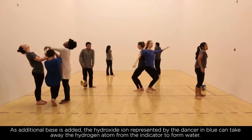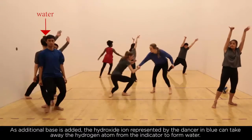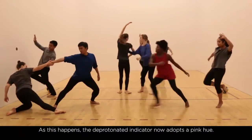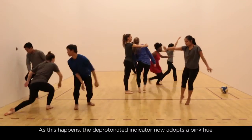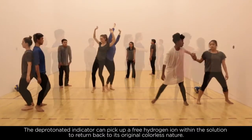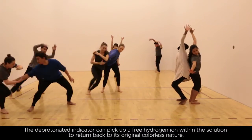As additional base is added, the hydroxide ion represented by the dancer in blue can take away the hydrogen atom from the indicator to form water. As this happens, the deprotonated indicator now adopts a pink hue. The deprotonated indicator can pick up a free hydrogen ion with the solution to return back to its original colorless nature.